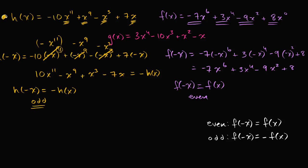Now let's think about g of x. You might just be able to look at it and say: there's an even function term here, and another even function term here. But there's also an odd function term and another odd function term — it has a 3rd degree term and a 1st degree term. So it's a mixture of even and odd functions.